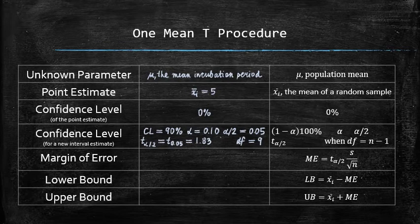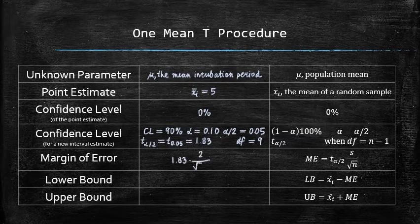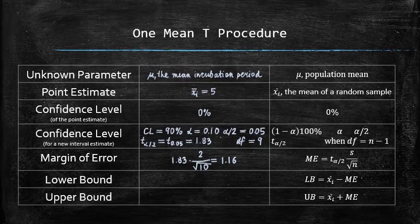Next, we can use the formula and compute the margin of error as 1.83 times 2 divided by square root of 10, which is equal to 1.16.